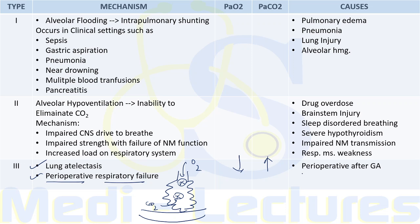Causes include the perioperative period after general anesthesia, where there is a decrease in functional residual capacity leading to collapse of dependent lung units. Treatment includes frequent position changes for the patient, chest physiotherapy, upright positioning, and non-invasive positive pressure ventilation.